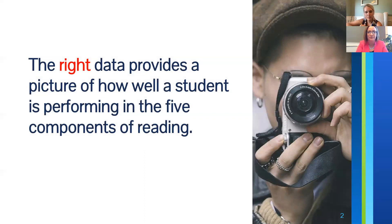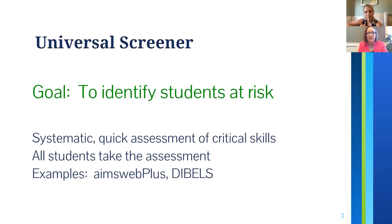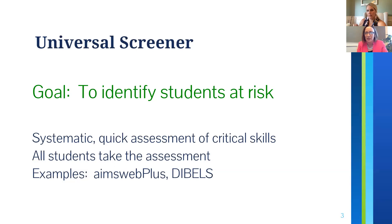The first thing we have to do is look at our universal screeners — those assessment pieces that all students get. These universal screeners are usually systematic and quick. It could be anything from AimswebPlus to DIBELS or other types of assessments. They're usually very short and are something all students receive, usually at those benchmark periods three times per year.